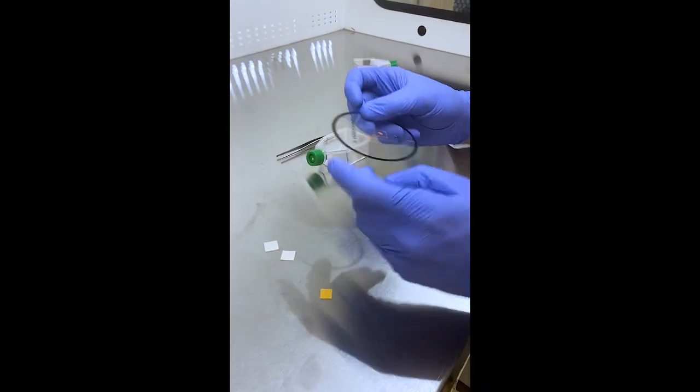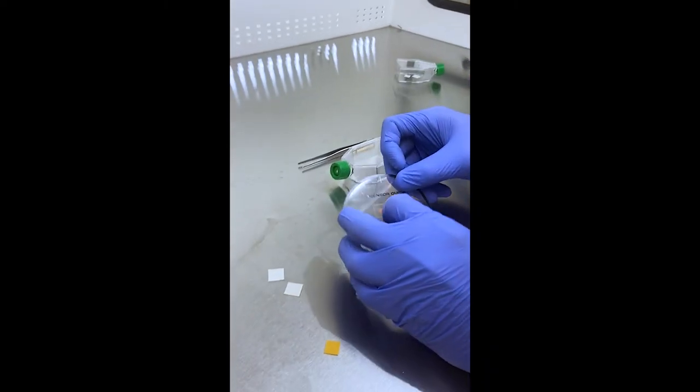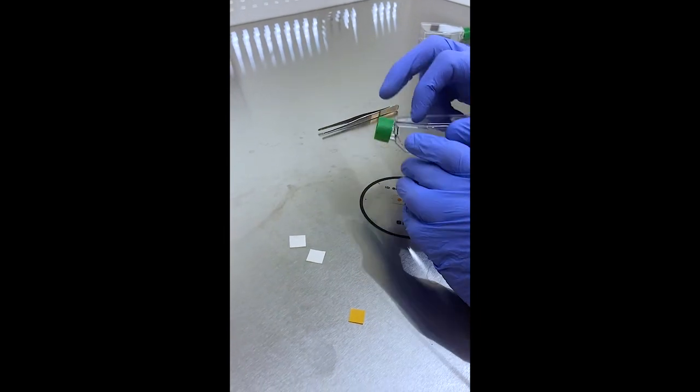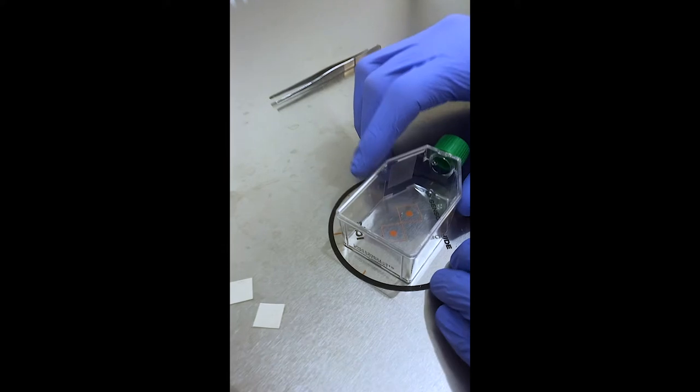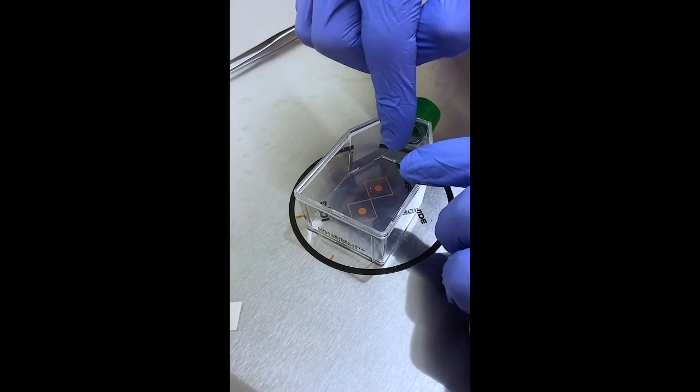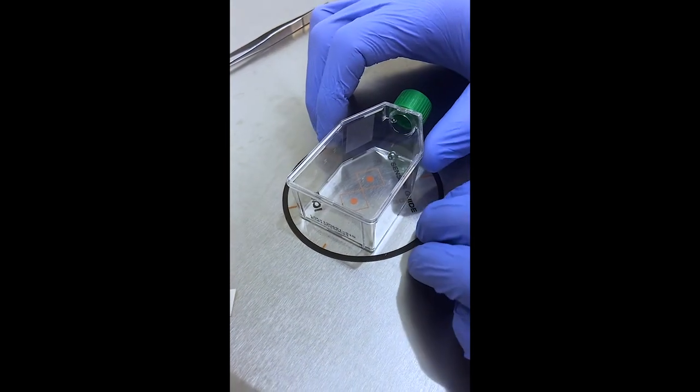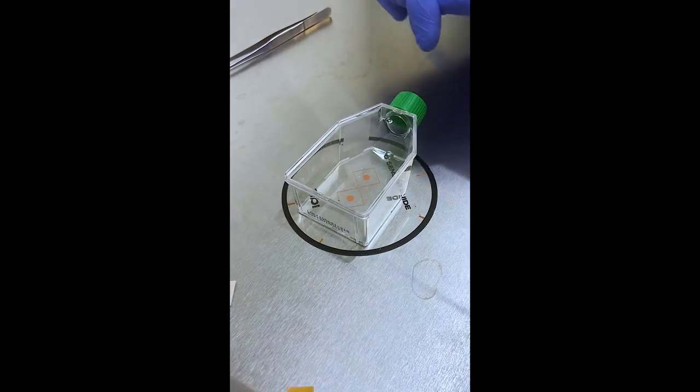So we'll start by taking the ID sensor guide and placing it down underneath the culture vessel. And you want to align these targets where the sensor patches will ultimately end up in your culture vessel. So here I'll put them towards the center of the T25 flask.